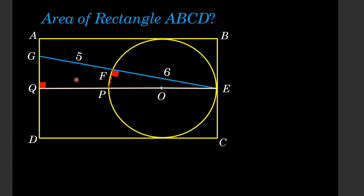If we consider the two triangles — triangle EPF and triangle EQG — in these two triangles one angle is 90 degrees, so both are right triangles. Moreover, the angle at point E is common to both triangles. So by angle-angle similarity, we can say that triangle EPF is similar to triangle EQG.